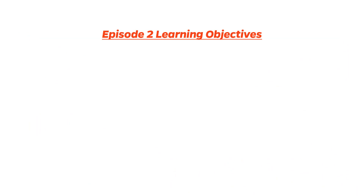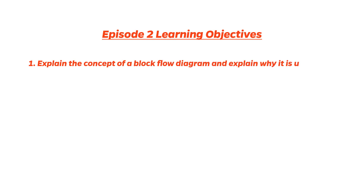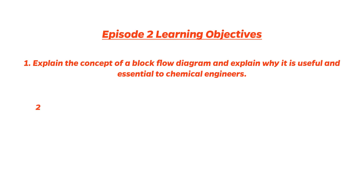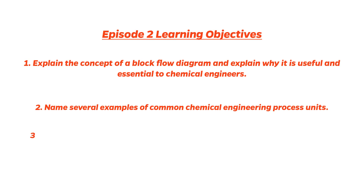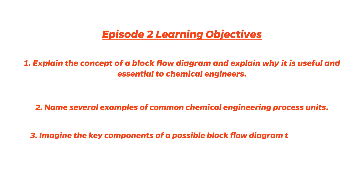Wrapping up this episode, let's review the learning objectives. Now that this video is over, you should be able to do the following: 1. Explain the concept of a block flow diagram and explain why it is useful and essential to chemical engineers. 2. Name several examples of common chemical engineering process units. 3. Imagine the key components of a possible block flow diagram to produce a given product.